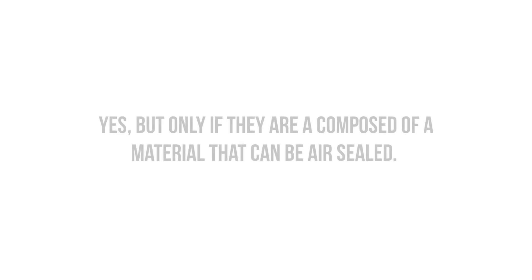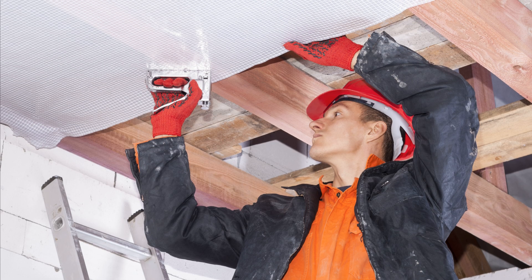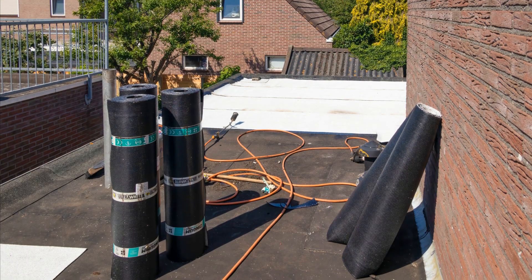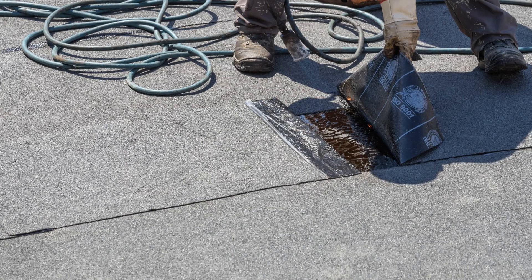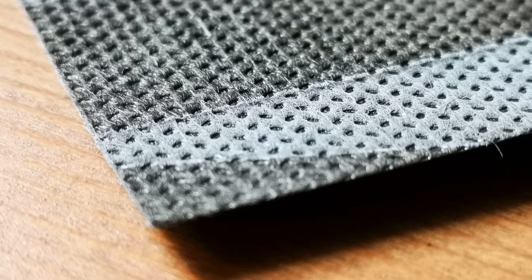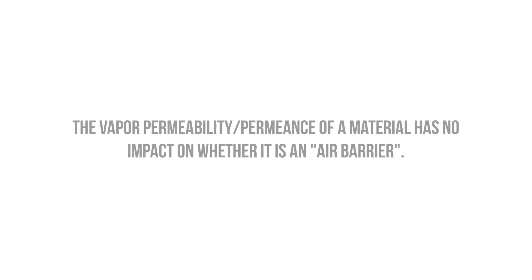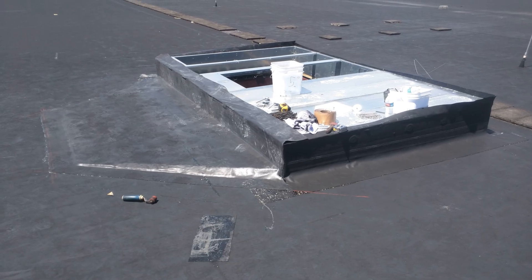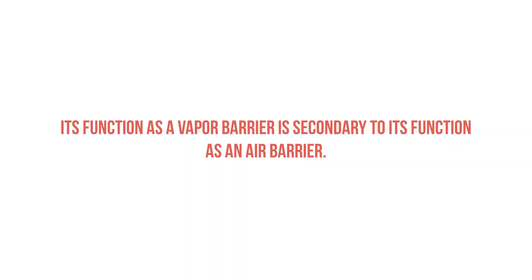Can vapor barriers be air barriers? Often the answer is yes — vapor barriers and vapor retarders can serve as air barriers if they are composed of a material or membrane that can be properly sealed without any penetrations or perforations. We more or less refer to these as vapor impermeable air barriers. Common examples are self-adhering SBS rubberized asphalt membranes and taped polyethylene. Importantly, the vapor permeability of a material has no impact on whether it makes a good air barrier, and there are times we want vapor permeable air barriers — such as exterior walls in mixed climates — and times we want vapor impermeable ones, such as flat roof systems.